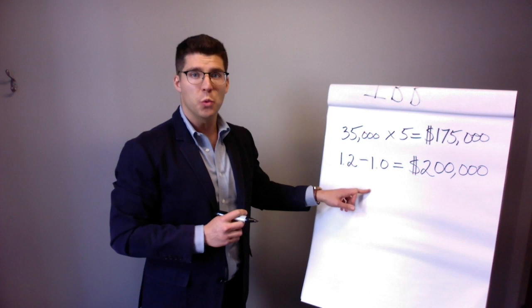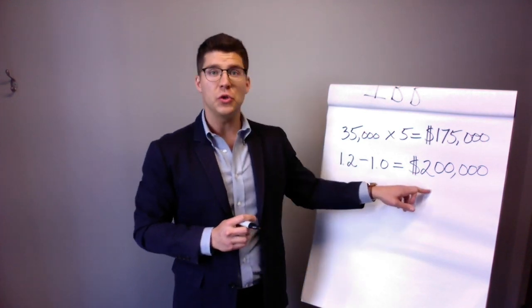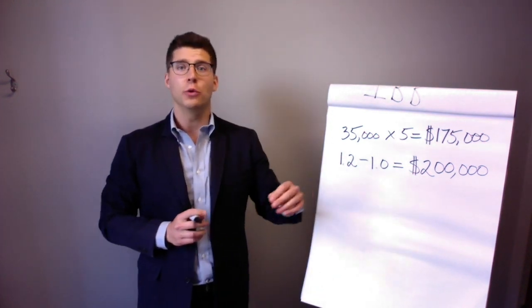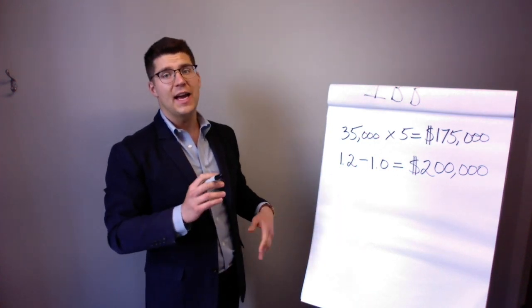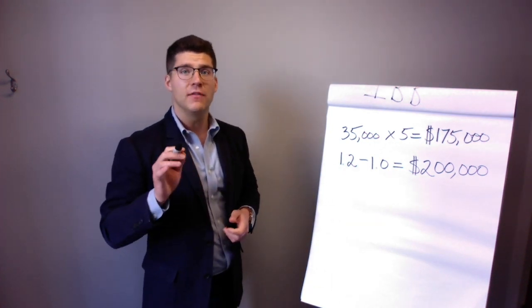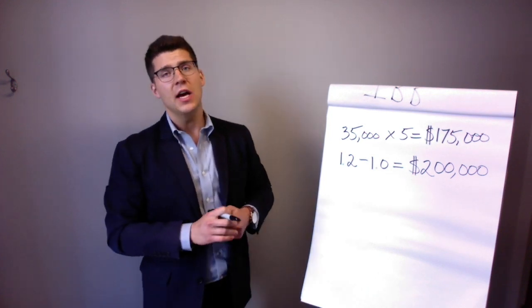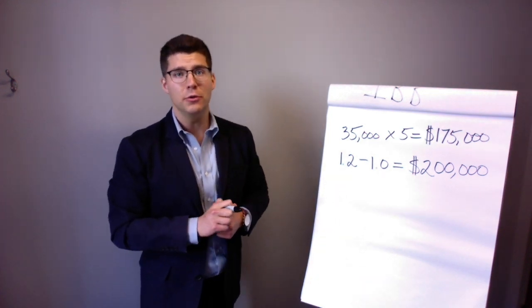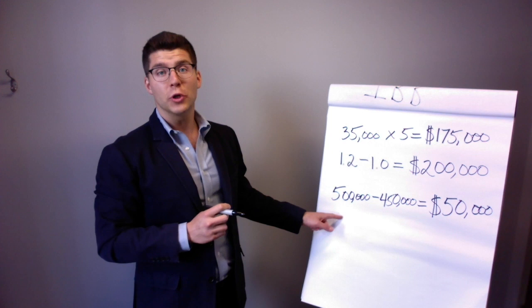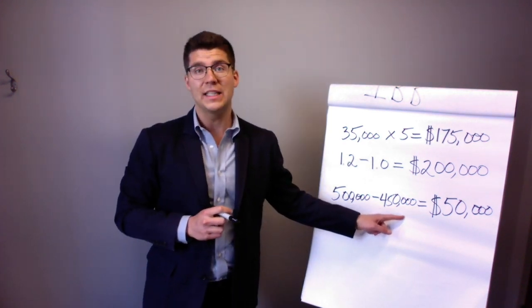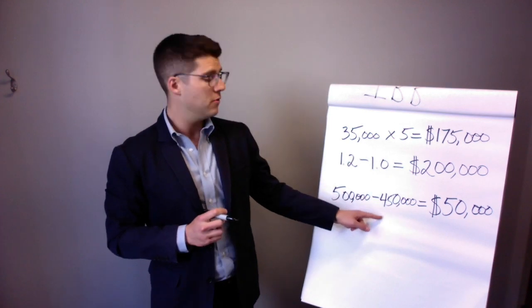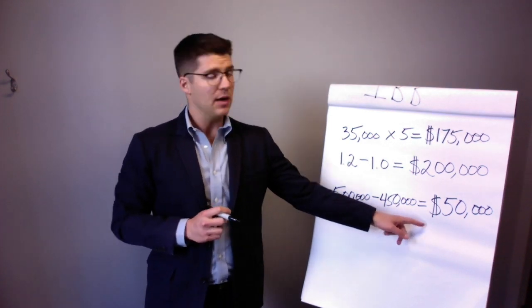And for mortgage principal, let's say that after five years you paid off $50,000 of that $500,000 loan. So here we originally owed $500,000. Now we're subtracting the amount we still owe—$450,000—and we get $50,000 that we've paid off.